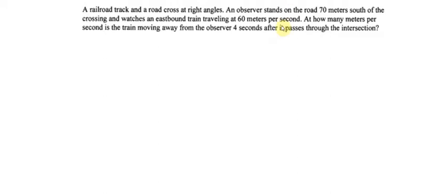All right, so let's see what we have going on here. We have the railroad and the road, so I'm going to make this my road and this one right here is the railroad. And the observer stands here. This length is 70 meters, and it's important to note that this is always 70 meters.